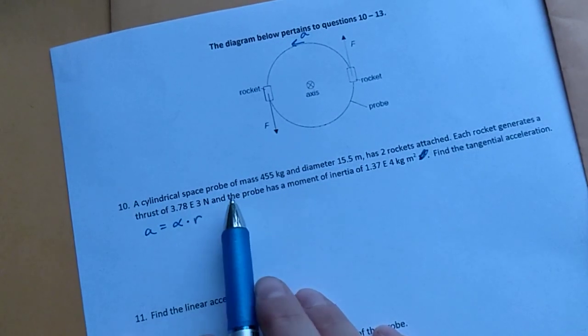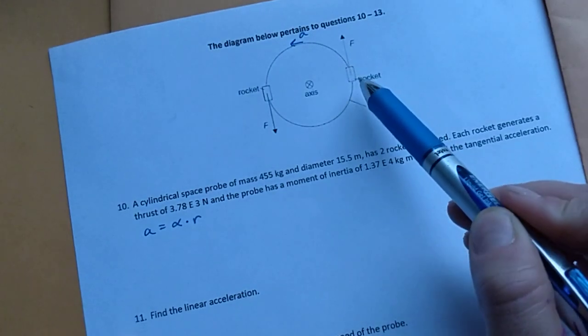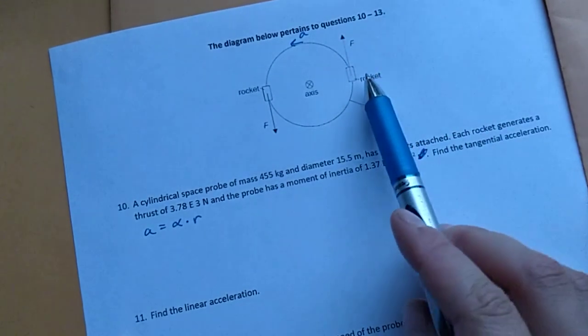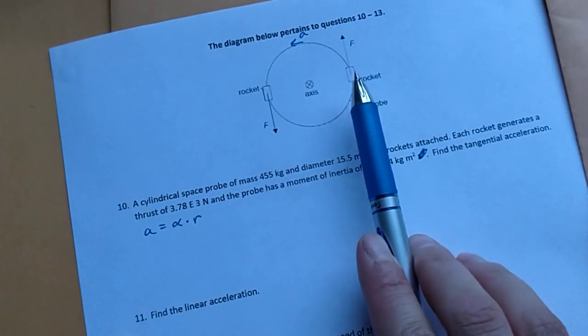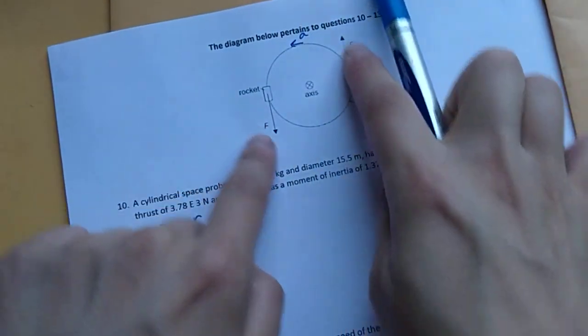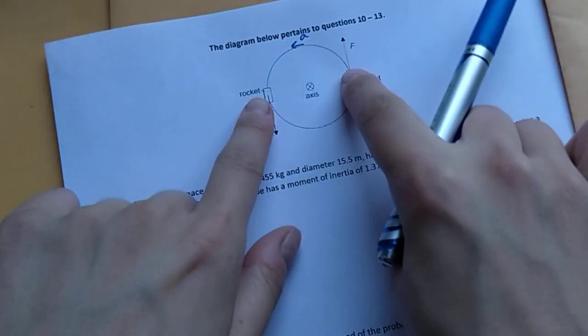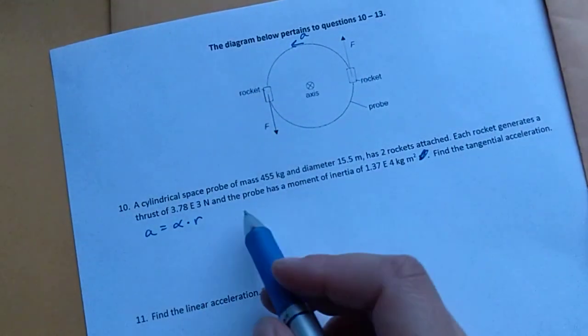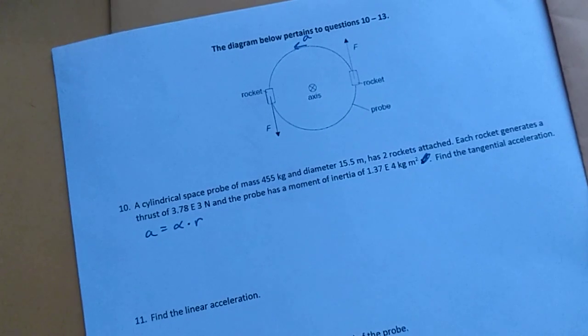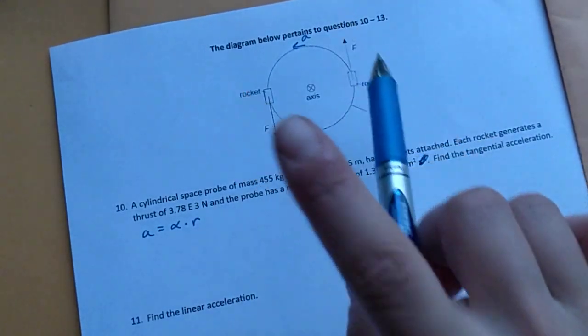And I can relate this to the fact that these rockets are exerting a force on the object. So if the object is experiencing a force like this and a force like this, it's causing rotation, it's causing it to rotate. Like so. So we have two rockets both generating thrusts in opposite directions. This makes the object rotate. It spins.